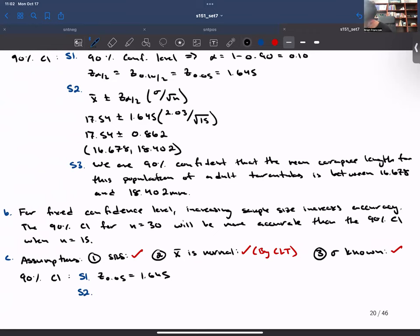And then on step two, we have X bar plus or minus Z alpha over two sigma divided by the square root of N.